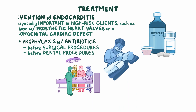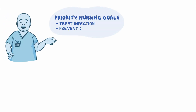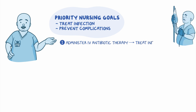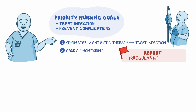Let's look at the nursing care for a client with endocarditis. The priority nursing goals are to treat the infection and prevent complications. First, administer the prescribed IV antibiotic therapy to treat the client's infection. Then, institute cardiac monitoring and report the presence of an irregular heart rhythm. If the client has a high degree of heart block, prepare to assist with cardiac pacing.